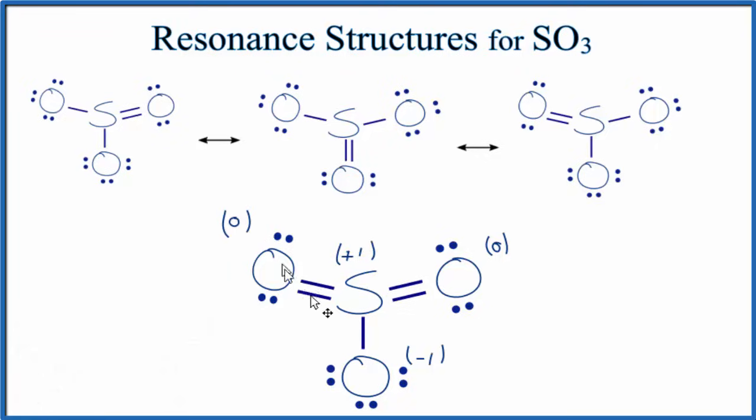We can then change these around just like we did up here to come up with three more resonance structures for SO3. Theoretically, based on our rules and models, these would be more likely structures to occur. Let's do that.